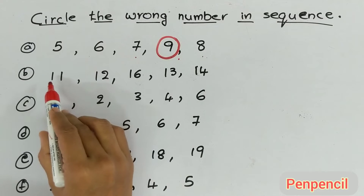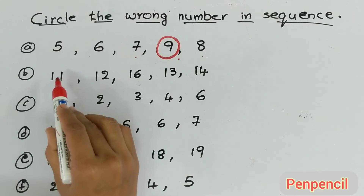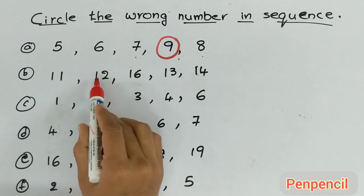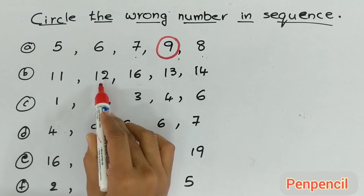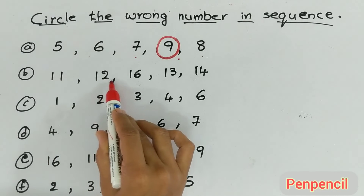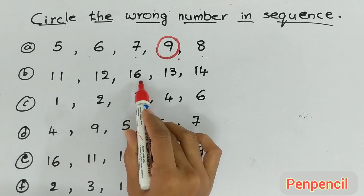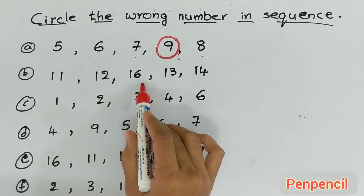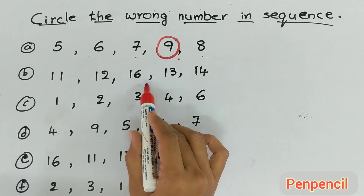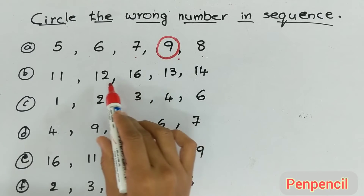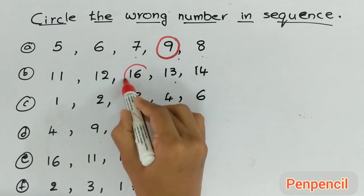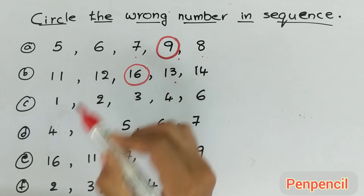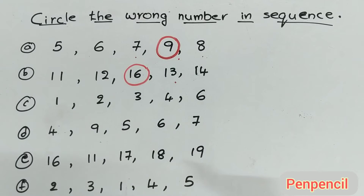Next one: 11, 12 — what is the number after 12? 16? No, 16 is wrong. After 12, 13 should be there. So 16 is the wrong number. How is it, kids?